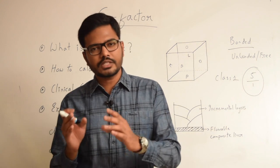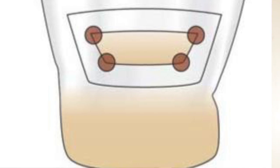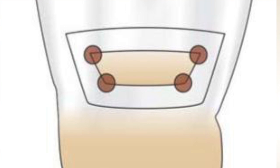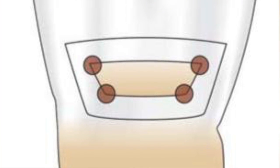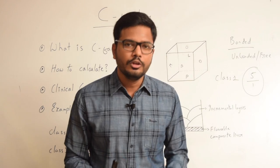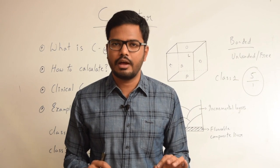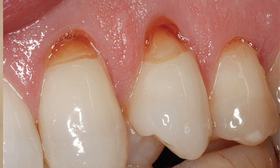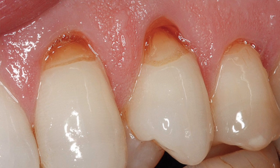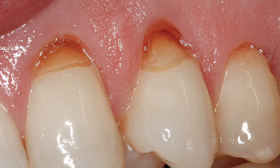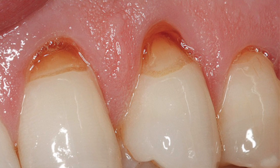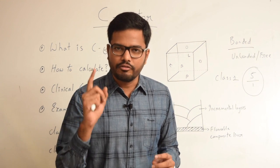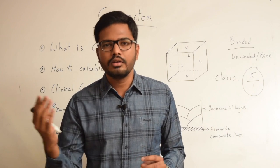Now coming to class 5 cavity: if a class 5 cavity is prepared in a conventional way, we have a mesial wall, distal wall, occlusal, gingival wall, and a pulpal floor. These five are bonded surfaces, and we have only one unbonded or free surface on the facial or buccal aspect. So in case of a conventional class 5 cavity, the C-factor is 5. However, in case of an abrasive lesion, the entire surface is scooped out or saucer-shaped with no definite walls and floor, so that entire surface is considered a single bonded surface. Hence the C-factor is 1, because we have one bonded surface divided by one free surface.